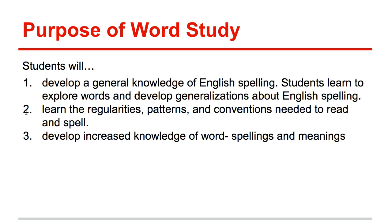Students need to develop a general knowledge of English spelling — an understanding about spelling and its elements so that kids can spell, but more importantly, so they can explore and play with words. A key component of Words Their Way and word study is identifying patterns and establishing generalizations, having kids act as investigators of the text. We want students to understand and identify the regularities, patterns, and conventions needed to read and spell — mapping out the different characteristics of language to use the patterns we see across it.